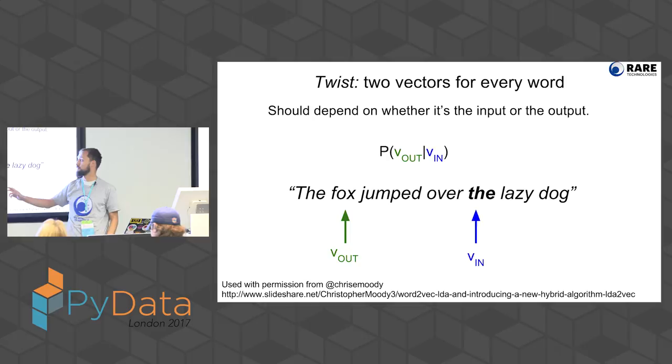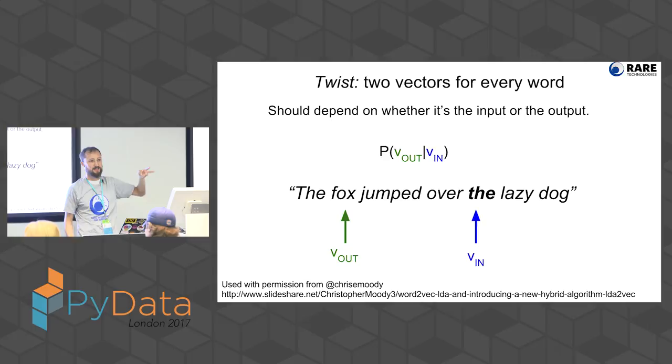The only tricky part is to define this probability. If I have two vectors — one list of three numbers and another list of three numbers — how do I get a probability out of that?